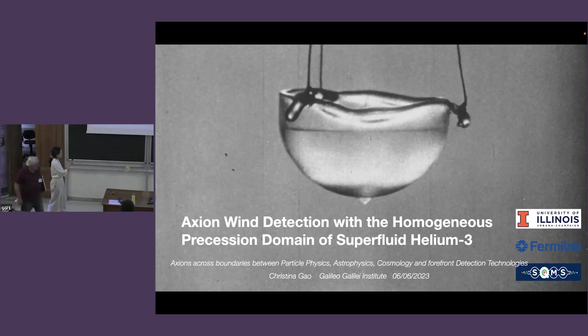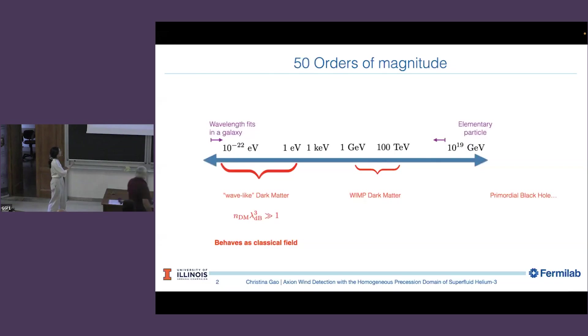We have no idea what dark matter is. Since we're doing axion, and it's a wave, we've heard the occupation number is really high, so we can think of axion dark matter as a classical field. This is the approximation we are going to take in this talk.